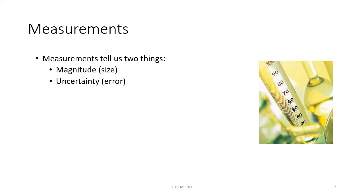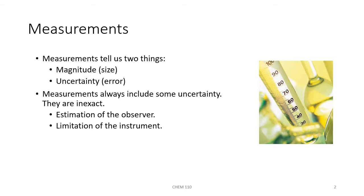Measurements will tell us two important things. They tell us about the magnitude or the size of the measurement, and they tell us about the uncertainty or the error associated with the measurement. All measurements are going to have some level of uncertainty or approximation with them. All of them are inexact to the extent of the estimation of the observer or the limitations of the instrument or piece of glassware that you're using to actually take the measurement with.